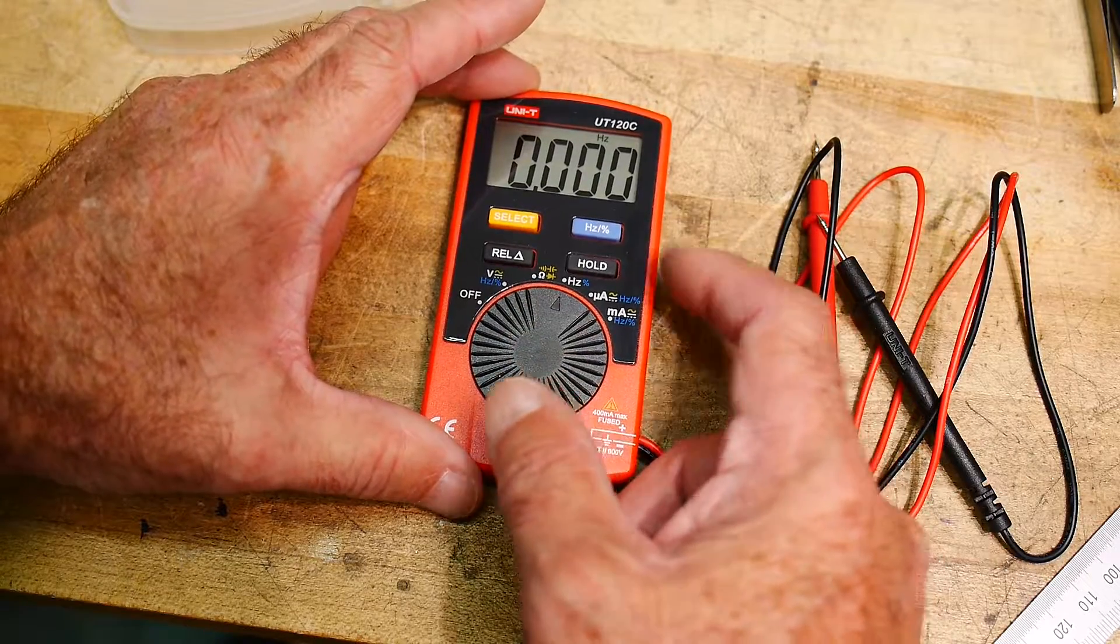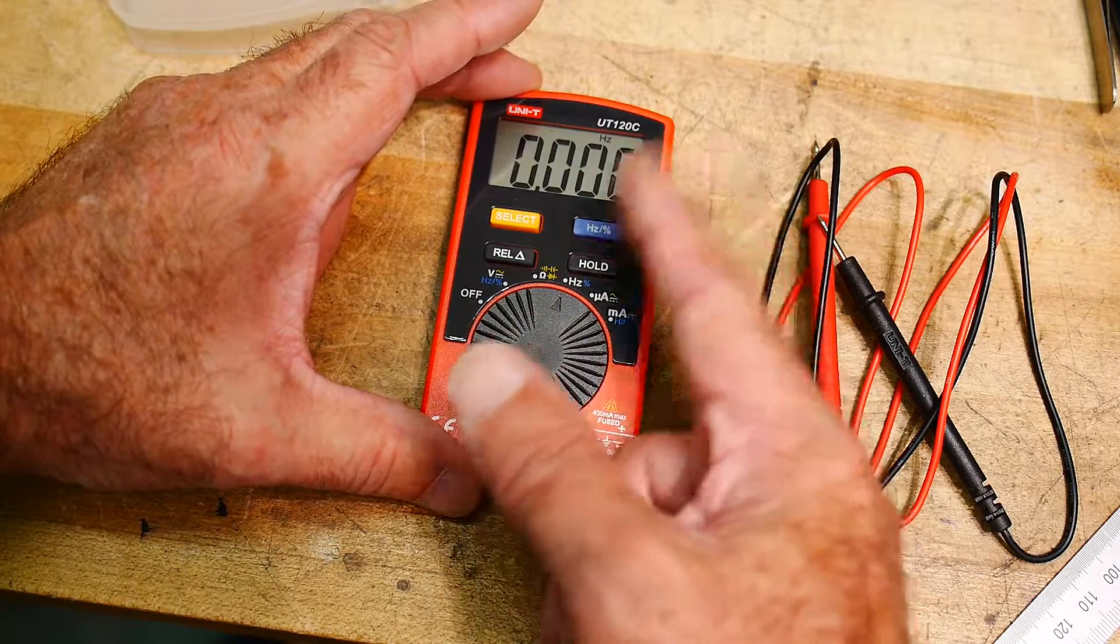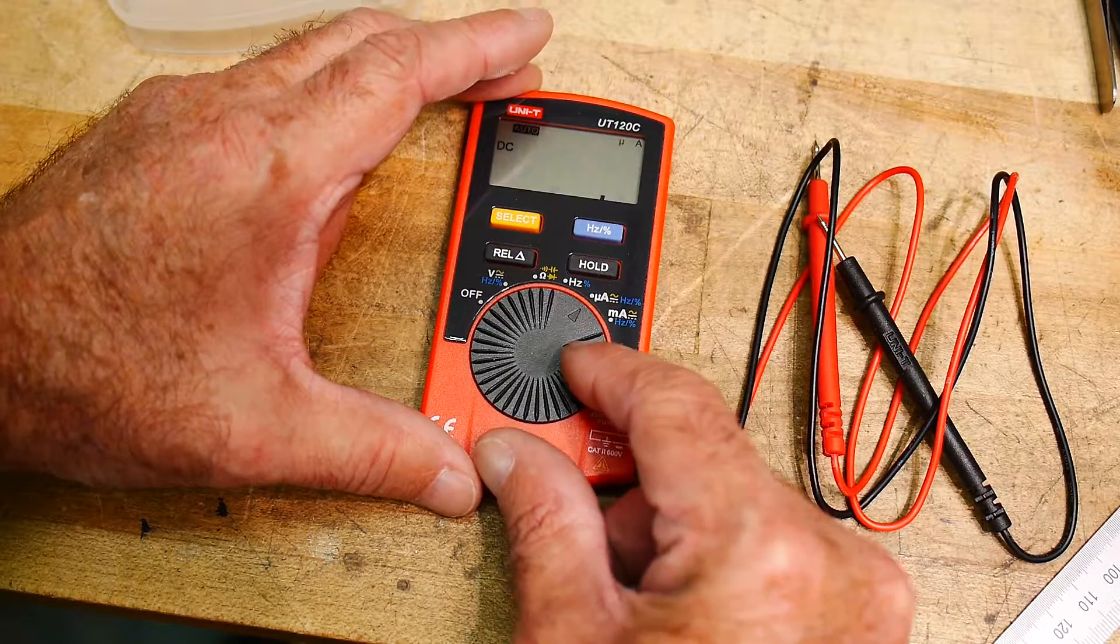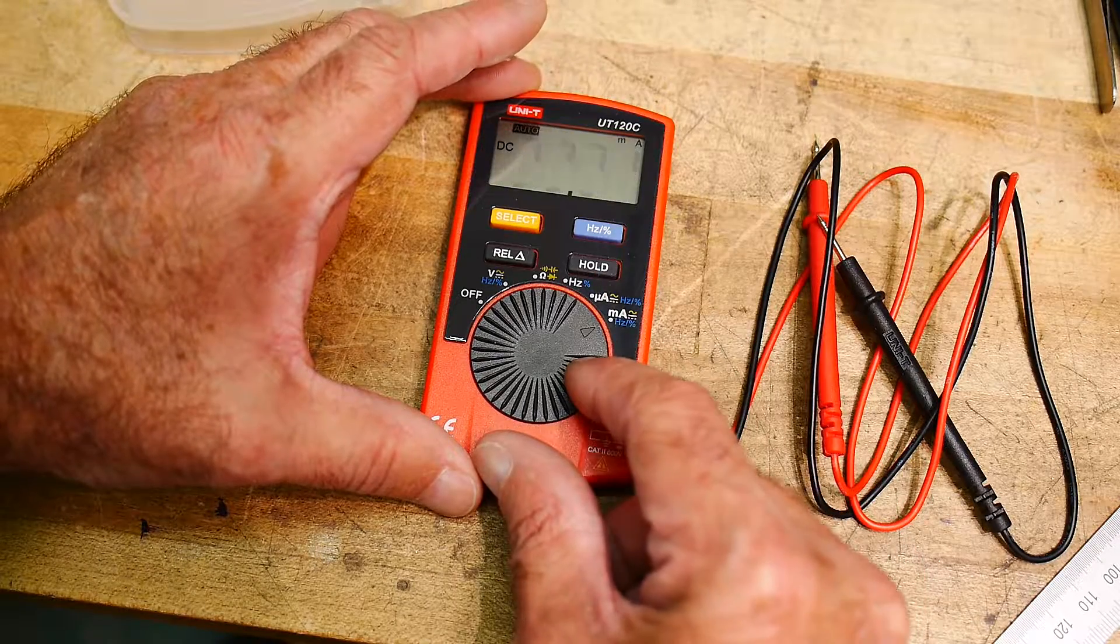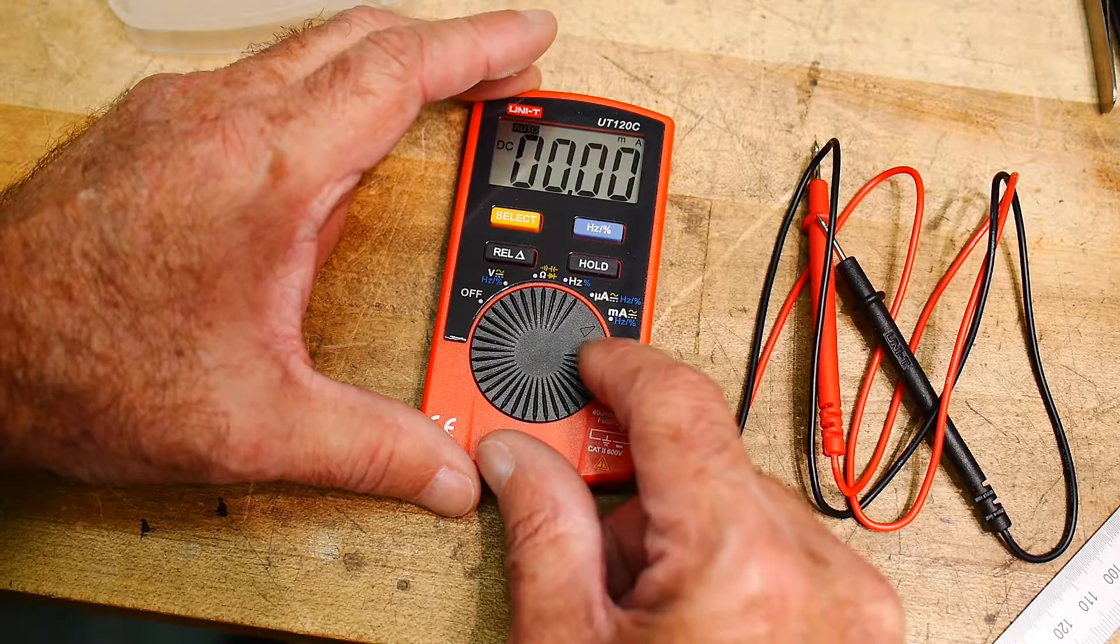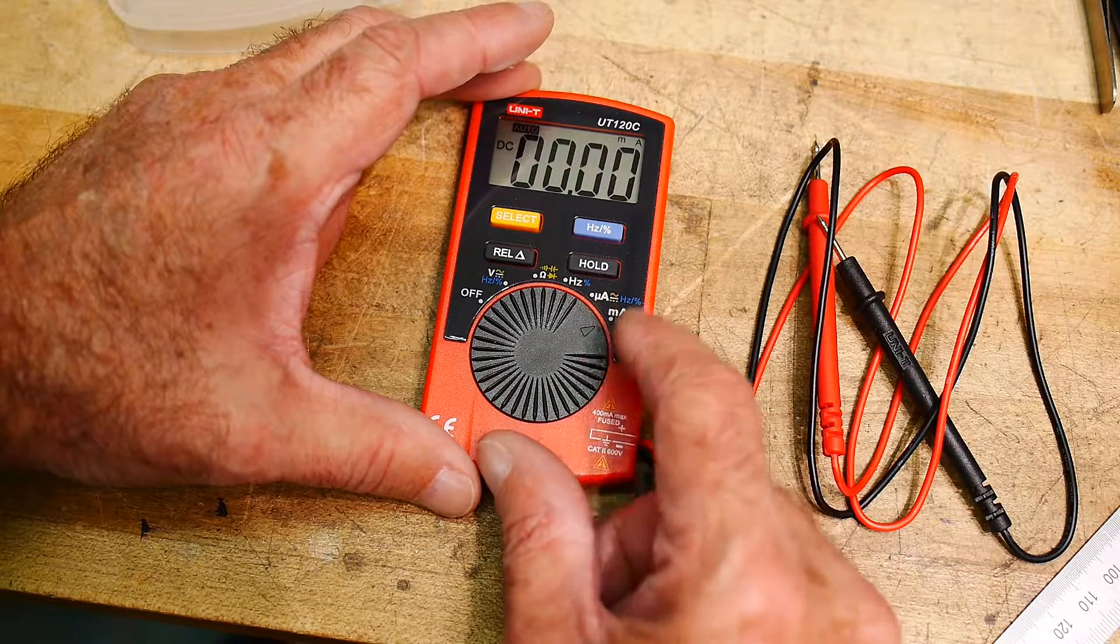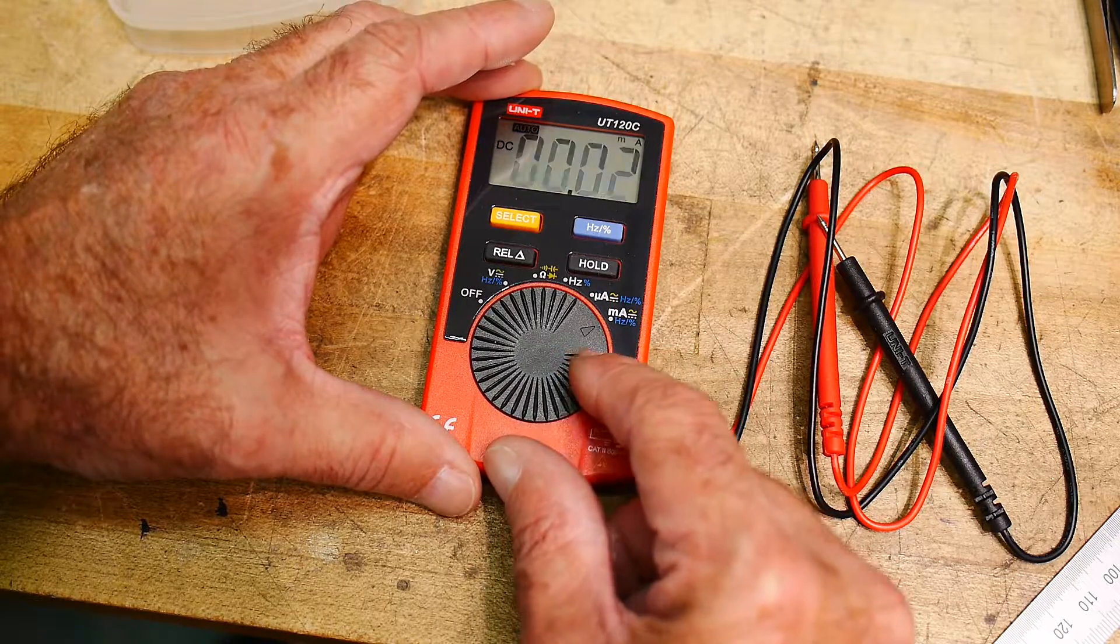It's got a little frequency counter built in. I'm not sure how far it goes up. It'll do micro amps and milliamps, so that's pretty cool. I don't really have any use for those at the junk store, but they are in there.